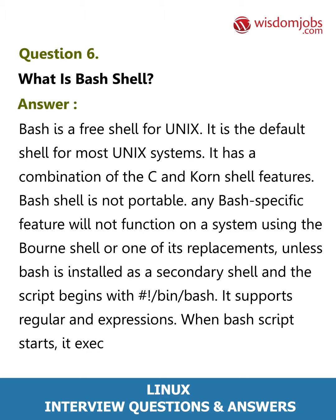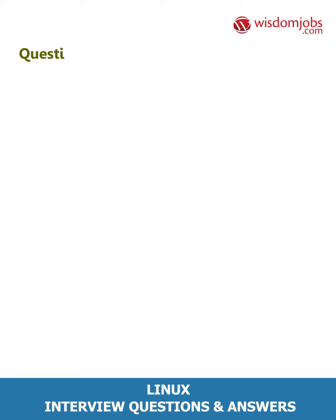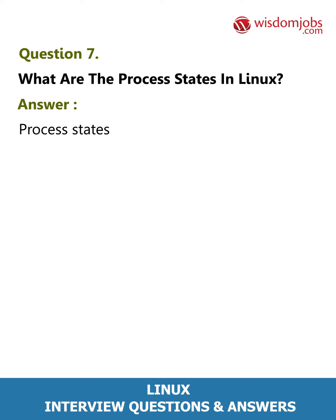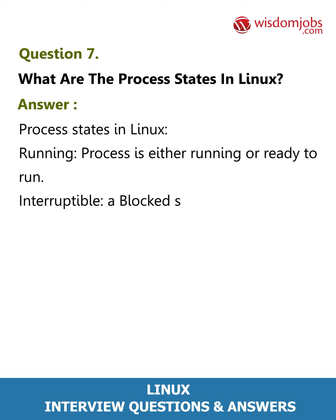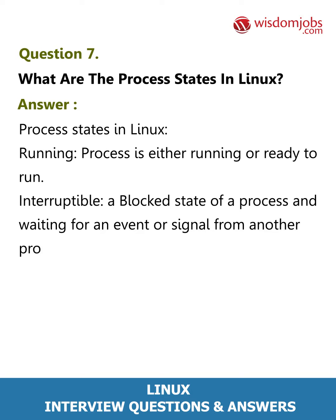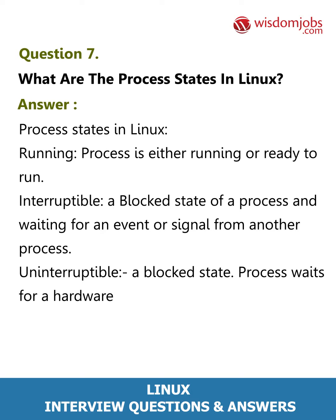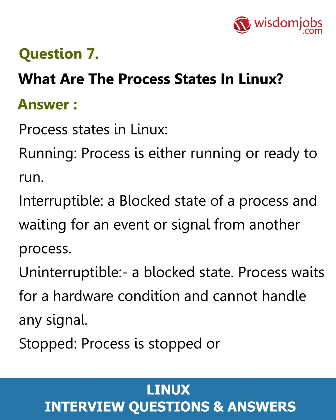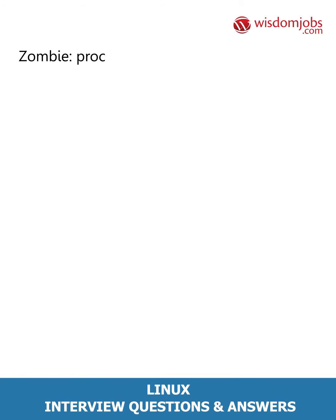Question 7: What are the process states in Linux? Answer: Running — process is either running or ready to run. Interruptible — a blocked state of a process waiting for an event or signal from another process. Uninterruptible — a blocked process waiting for a hardware condition that cannot handle any signal. Stopped — process is stopped or halted and can be restarted by some other process.